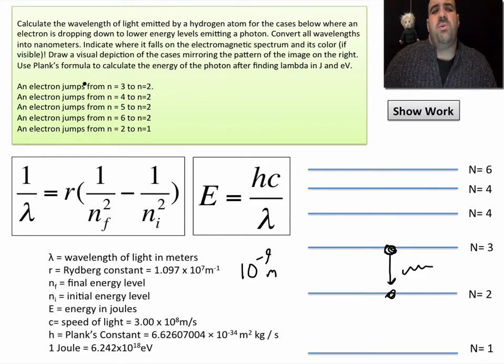Finally, I want you to use Planck's formula to calculate the energy of the photon after finding lambda in joules and electron volts. The first thing you're going to do is take this case. I'm going to be working with this one. I'm going to go through this whole problem from start to finish to show you how to do it. An electron jumps from three to two.